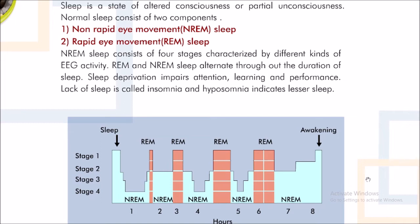REM and NREM sleep alternate throughout the duration of sleep. Sleep deprivation impairs attention, learning and performance. Lack of sleep is called insomnia and hyposomnia indicates lesser sleep.